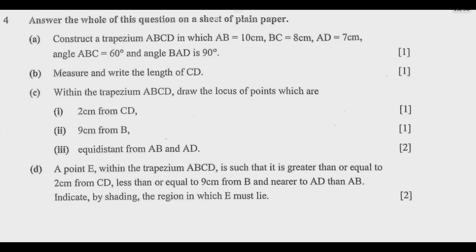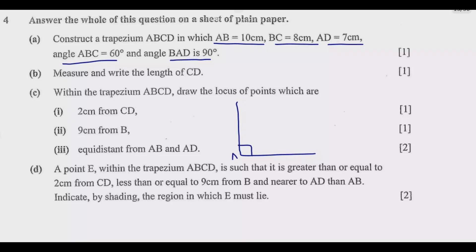Let us start with question A. Before we even start the actual construction, you can do a rough sketch so that you know what you're dealing with. AB is 10 cm — the longest side. Then BC is 8 cm, AD is 7 cm. Angle BAD is 90 degrees, so this angle here is 90 degrees. This one is 10 cm, and I can do a bit of a sketch from there.